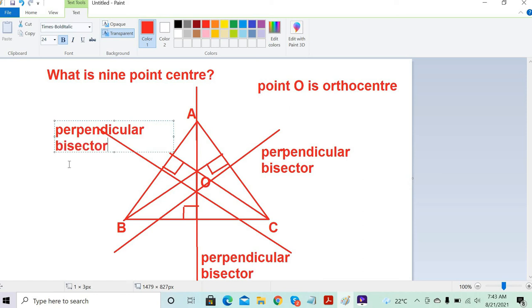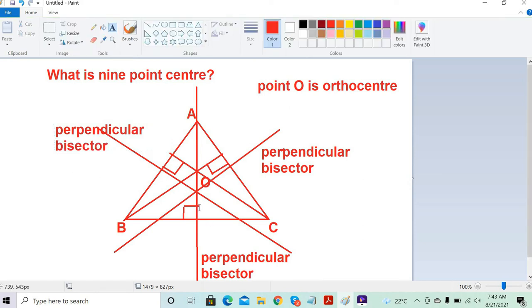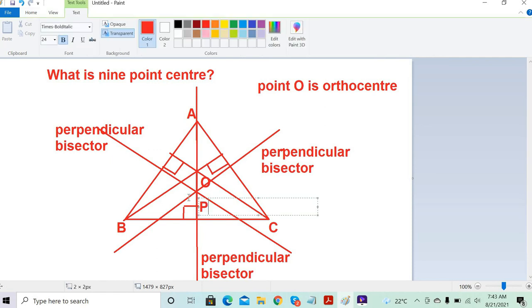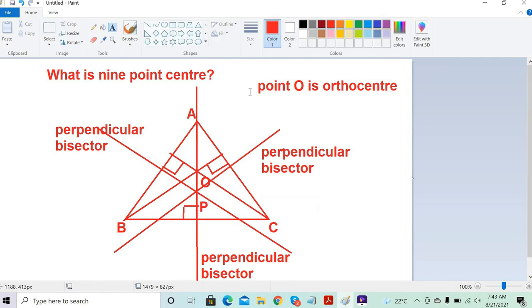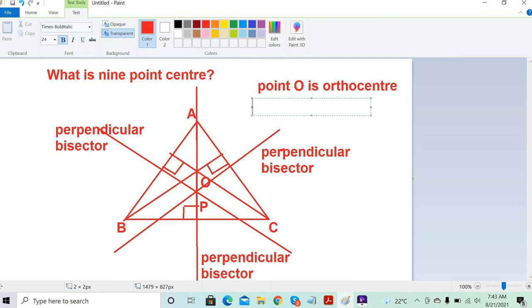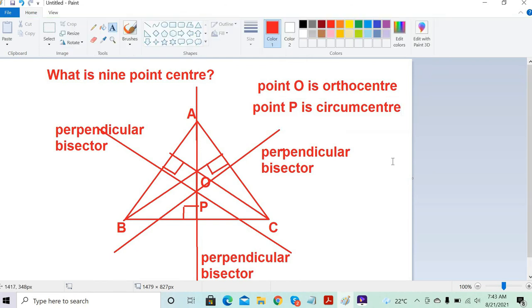When you join the two points—let's call them O and P—between O and P there is a line segment. If we find the midpoint of OP, that is called the nine-point center.